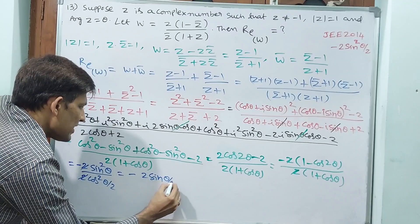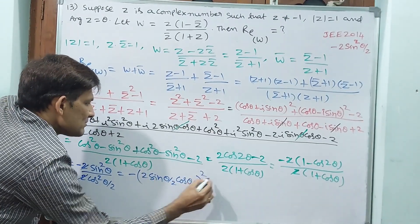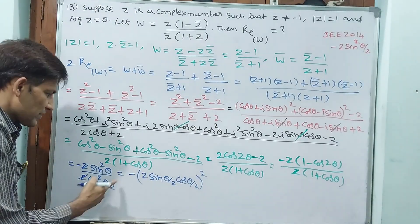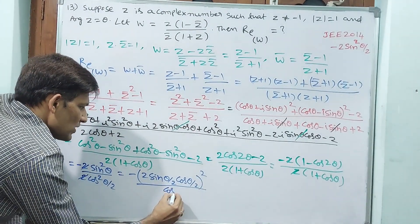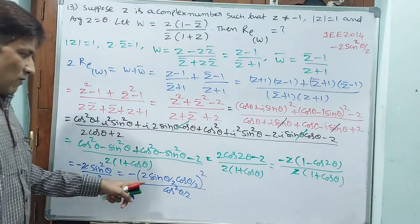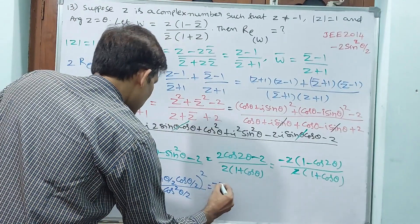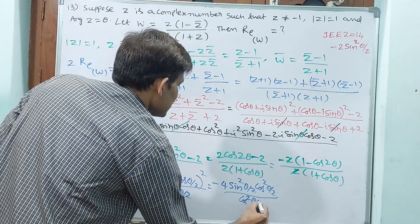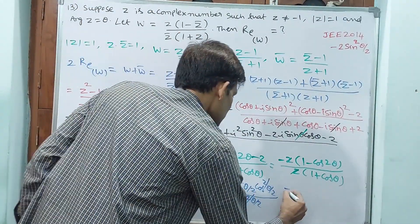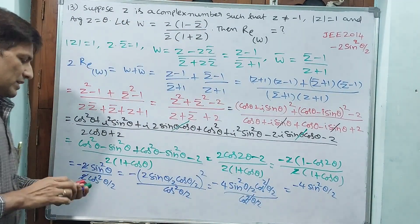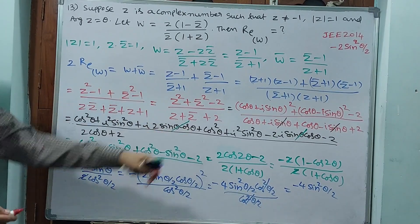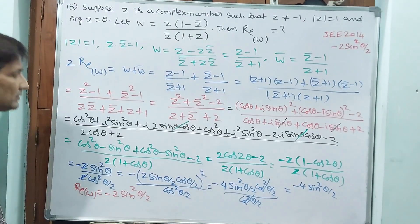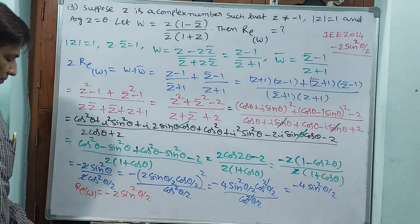So we get minus 2sin²θ divided by 2cos²(θ/2). Using the identity sinθ equals 2sin(θ/2)cos(θ/2), sin²θ equals 4sin²(θ/2)cos²(θ/2). This gives minus 4sin²(θ/2)cos²(θ/2) divided by cos²(θ/2). The cos²(θ/2) cancels, leaving minus 4sin²(θ/2). This is 2 times the real part of W, so the real part of W equals minus 2sin²(θ/2). Let's go to the next question.